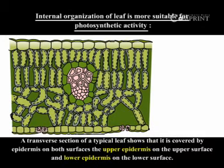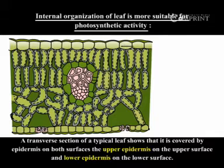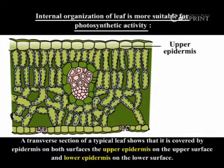Internal organization of a leaf is more suitable for photosynthesis activity. A transverse section of a typical leaf shows that it is covered by epidermis on both surfaces: the upper epidermis on the upper surface and lower epidermis on the lower surface.